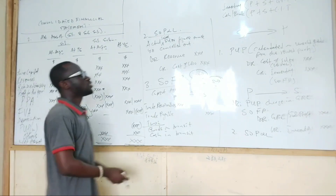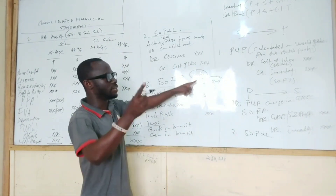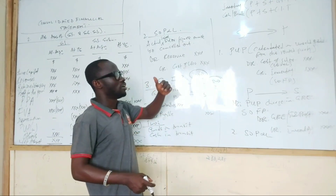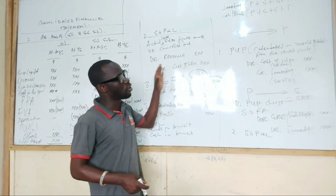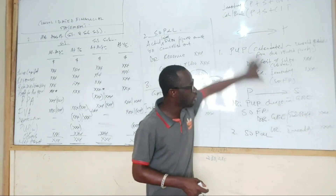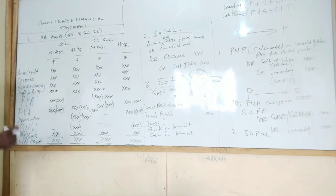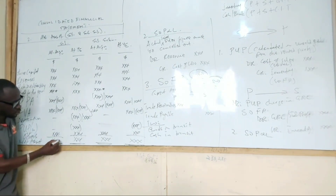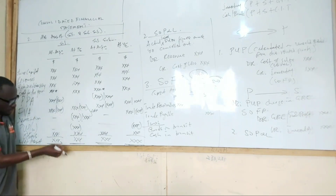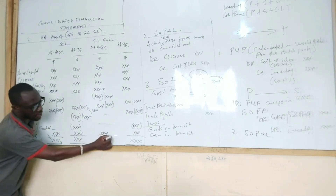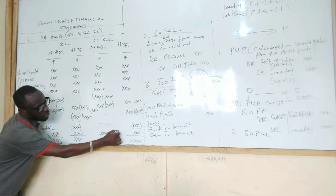Please note that the treatment of intragroup trading is dependent on the kind of financial statements we are preparing. Even for cash flow there is a different way to go about it but it follows the same idea. Also note that the net asset at acquisition is used to calculate goodwill — the net asset at acquisition is used to calculate goodwill all the time.